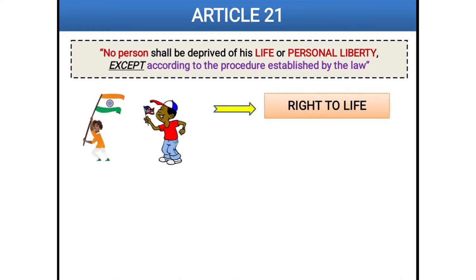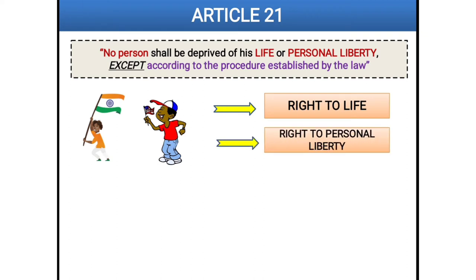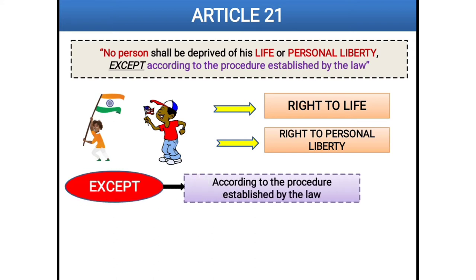But, as I have said for every article, no fundamental right is absolute in nature. Article 21 is no exception. The state can restrict your fundamental right under Article 21, but not from its own — only according to the procedure established by law. Article 21 can be enforced when a person's right to life and right to personal liberty is affected by the state.